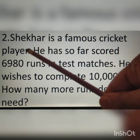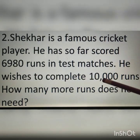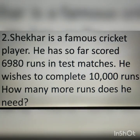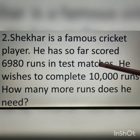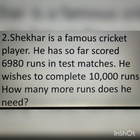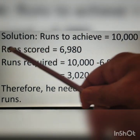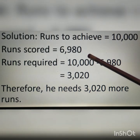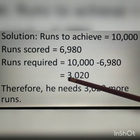Exercise 1.2, second question: Shekhar is a famous cricket player. He has so far scored 6980 runs in test matches and wishes to complete 10,000 runs. How many more runs does he need? Runs required equals 10,000 minus 6,980, and the answer is 3,020. Therefore, he needs 3,020 more runs.